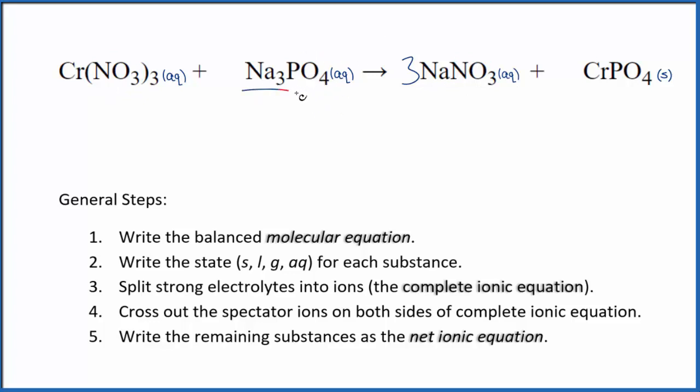But group 1 elements like sodium or potassium phosphate, they actually are soluble. So sodium phosphate is going to be soluble, but chromium phosphate, because chromium is not in group 1, that's going to be a solid. That means it's a precipitate, falls to the bottom of the test tube as the precipitate in this reaction.